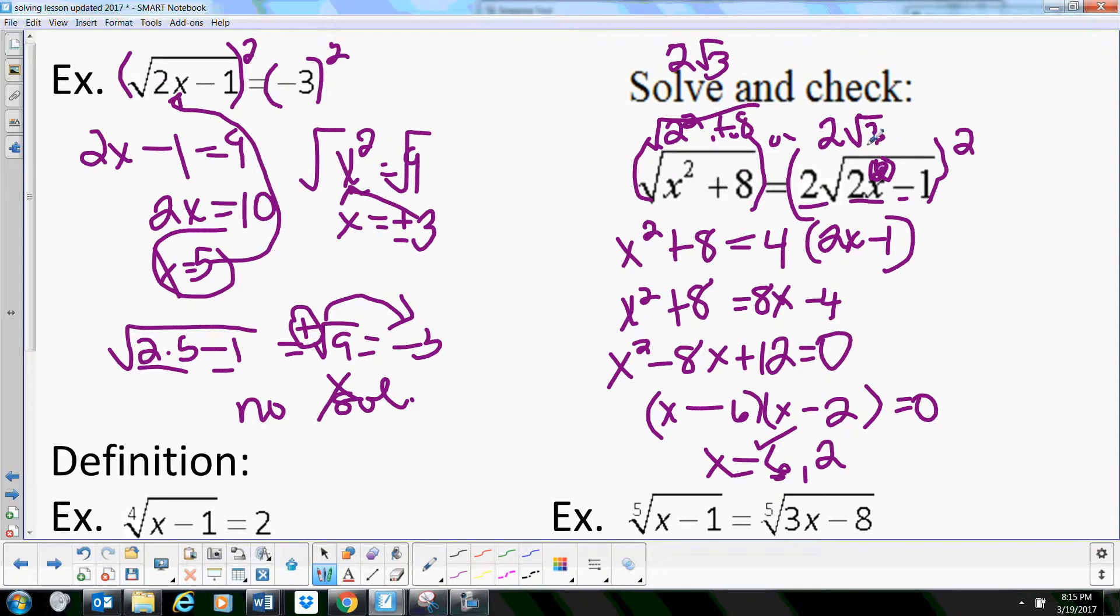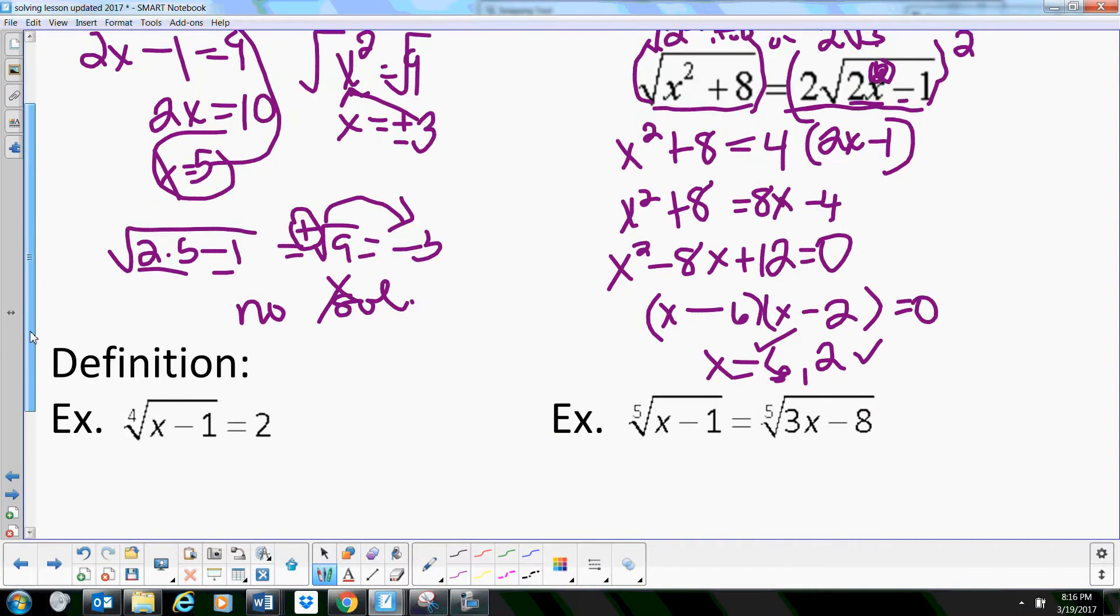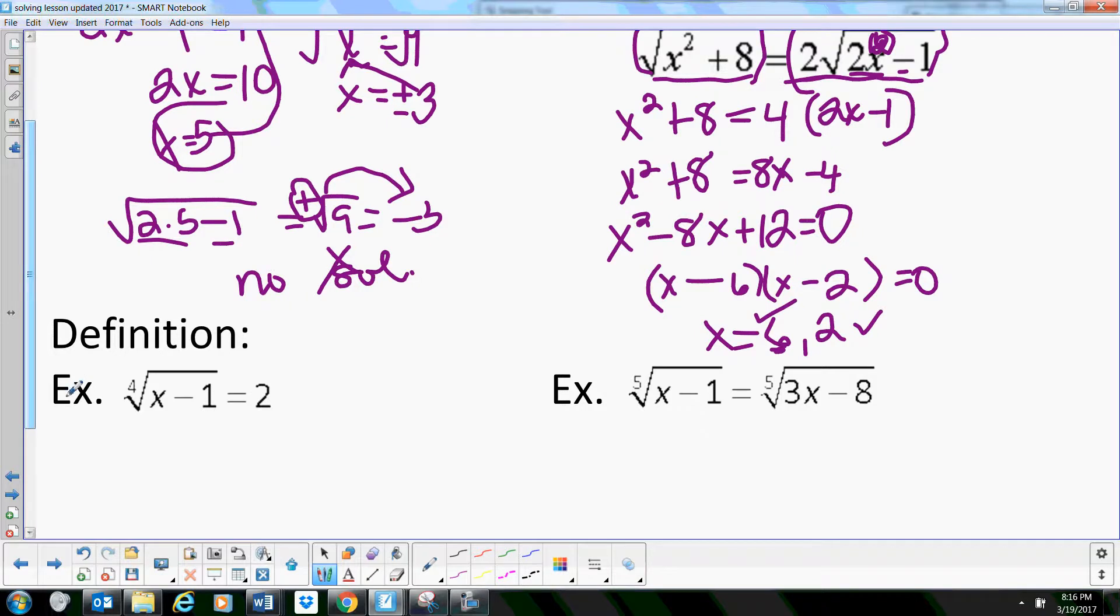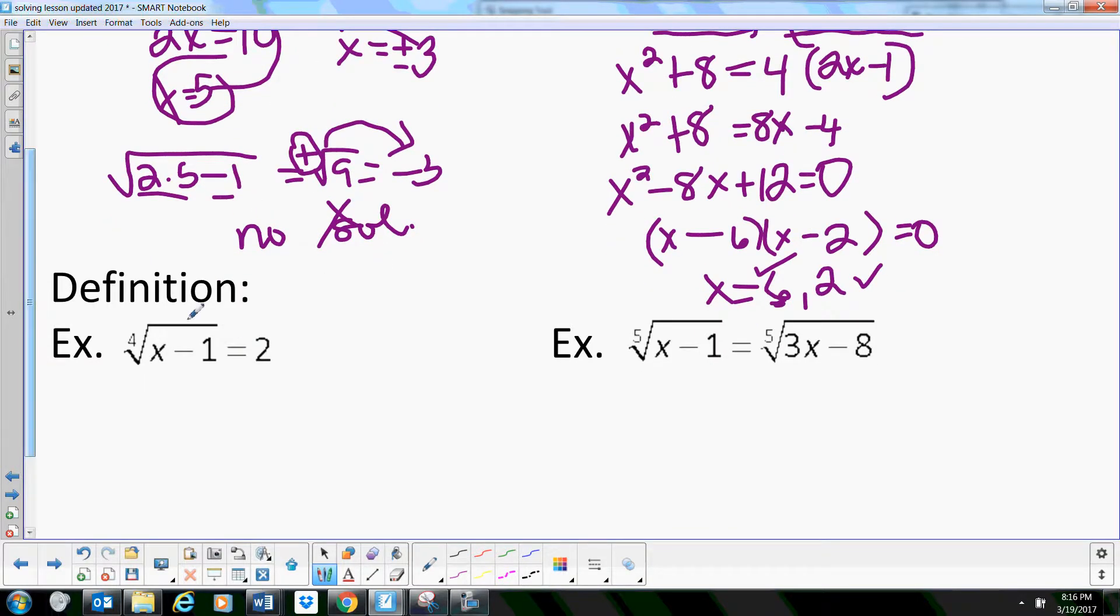So these two check out and they are equal, so this one actually has two solutions. And if you want to think, we're going to do this a little bit tomorrow, but if you want to put those in your graphing calculator you can actually see that there's two radical equations intersect each other twice and you can find the intersection points.